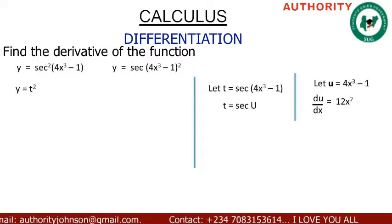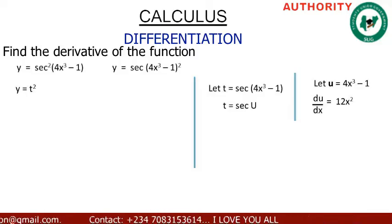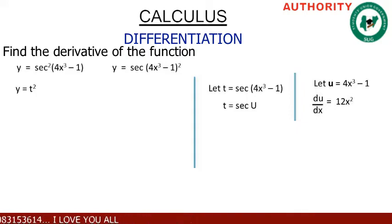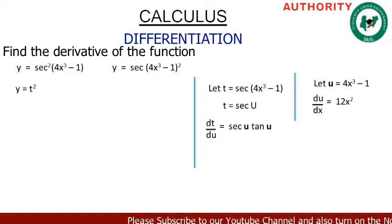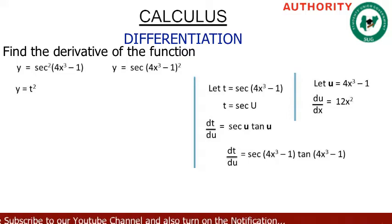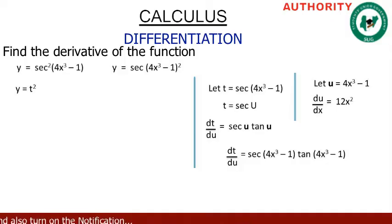In our function t = sec(u), let's find the derivative of t with respect to u. In this function t, we have two variables: t and u. So dt/du equals the derivative of sec(u), which gives sec(u)·tan(u). Substituting back u = 4x³ - 1, we get dt/du = sec(4x³ - 1)·tan(4x³ - 1).